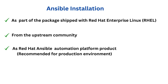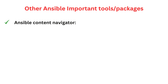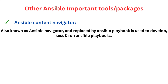Getting Ansible through the Red Hat Ansible Automation Platform is recommended for production environments because you get full support from Red Hat. One important tool to work with Ansible is the Ansible Content Navigator, also known as Ansible Navigator. It is used to develop, test, and run Ansible playbooks. This tool replaces the ansible-playbook tool and other command line tools such as ansible-config and ansible-inventory.